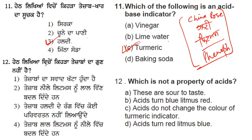The twelfth question: which is not the property of acid? Acids have a sour taste and turn blue litmus red. Acid turns blue litmus red — that is a property of acid.